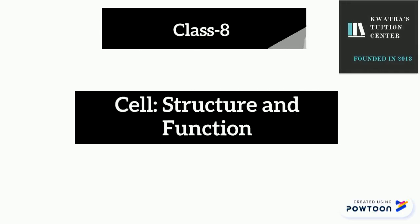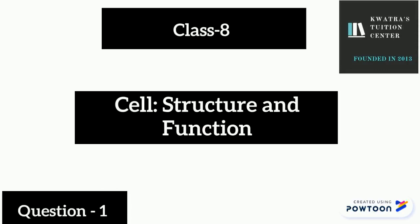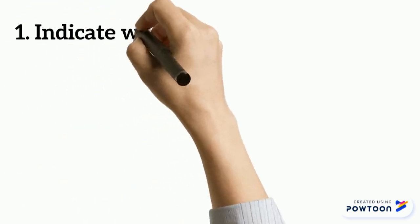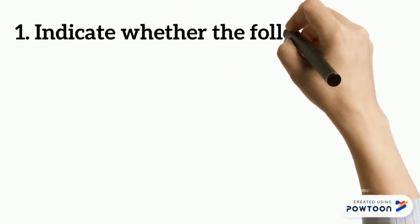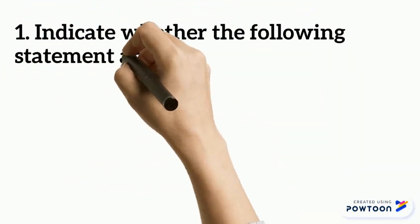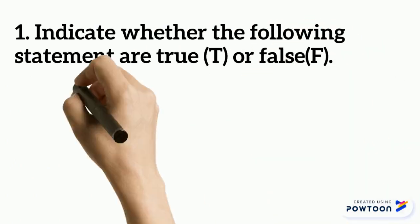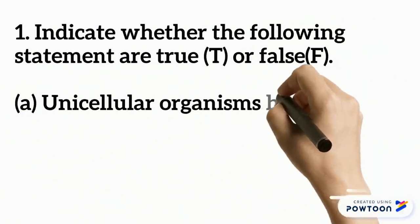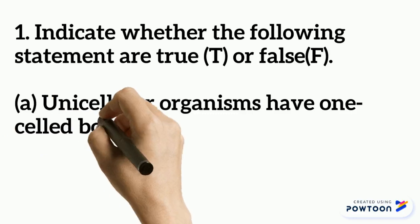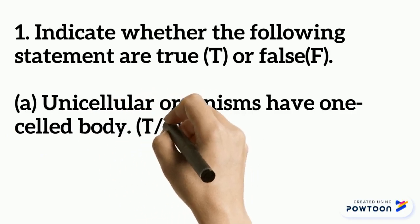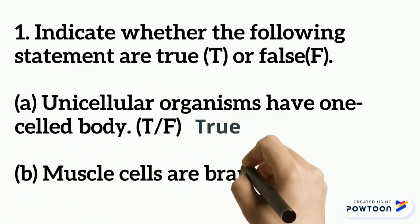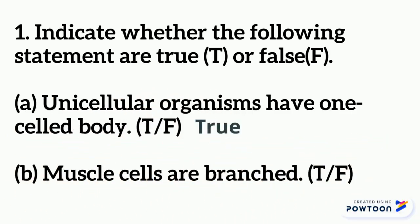Hello everyone, let's start with chapter number eight: Cell Structure and Function. Question number one says: indicate whether the following statements are true or false. The first one — unicellular organisms have one cell body. This is true, because unicellular organisms are those which have only one cell in them.